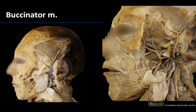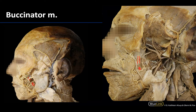If you remove the fat pad, you are looking at the buccinator muscle. This muscle covers the area superficial to the lateral teeth-bearing regions of the maxilla and mandible, and is anterior to the ramus of the mandible. You can even see remnants of the parotid duct in these images, because the parotid duct pierces the buccinator before emptying its contents into the oral cavity.